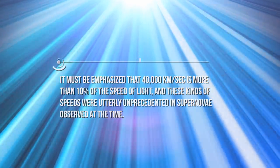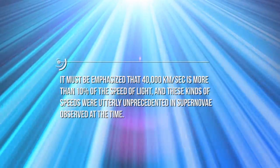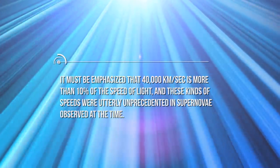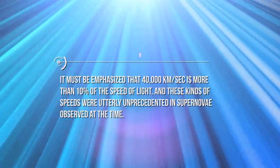Furthermore, the record-breaking photospheric velocity of 40,000 km per second was reproduced by the core collapse model following these parameters. It must be emphasized that 40,000 km per second is more than 10% of the speed of light. And these kinds of speeds were utterly unprecedented in supernova observed at the time. Even at late stages the spectra of SN1998BW revealed outward velocities exceeding 10,000 km per second.